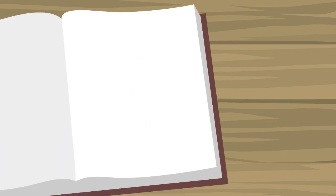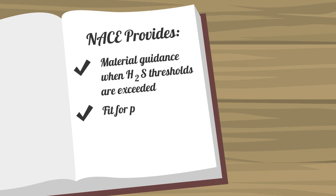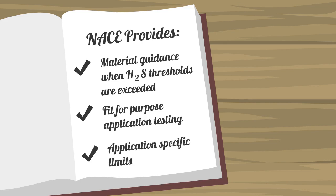For other alloys, the limits are not as strictly defined. It provides guidance for the selection and specification of materials when the H2S thresholds are exceeded. This allows for fit-for-purpose testing to qualify a material for a specific application. It also provides some application-specific limits.